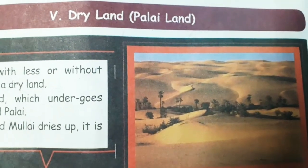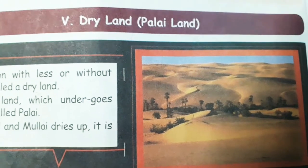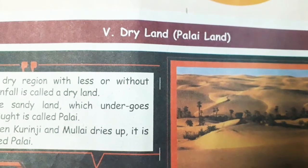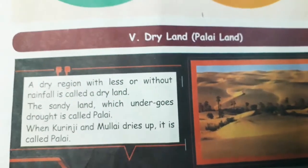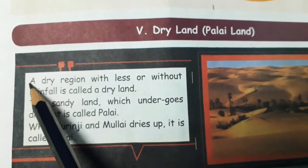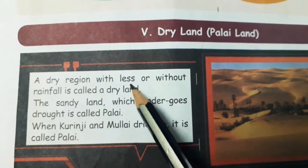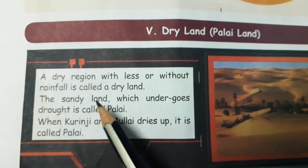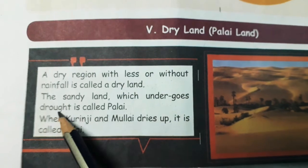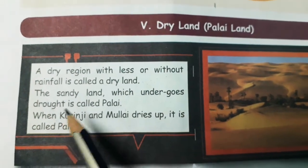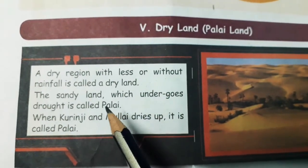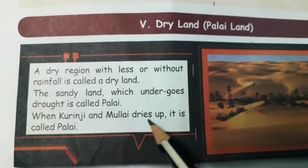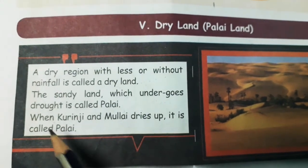You can see this picture — it is full of sandy land. If the Kurunji or Mullai land dries up, that place is also called Palai. To restate from the book: a dry region with less or without rainfall is called a dry land; the sandy land which undergoes drought — that is, lack of water or shortage of water — is called Palai. When Kurunji and Mullai dry up, it is called Palai.